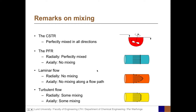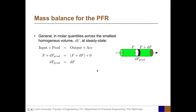The mass balance equation builds on the general mass balance: input plus production equals output plus accumulation. In this case, the control volume is a small slice along the axial direction, which we call dV — that is the smallest unit that is homogeneous.